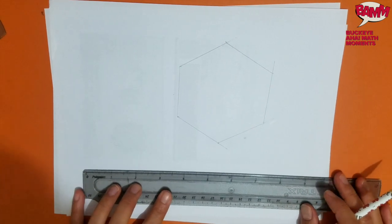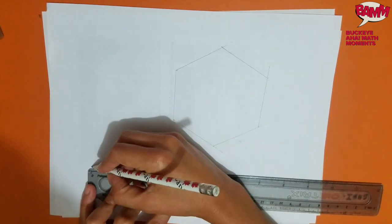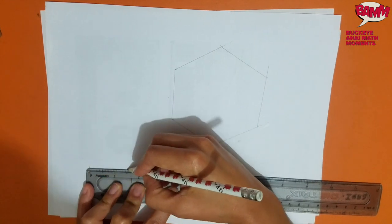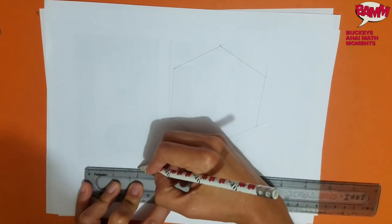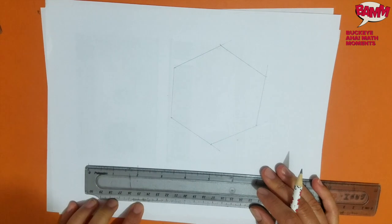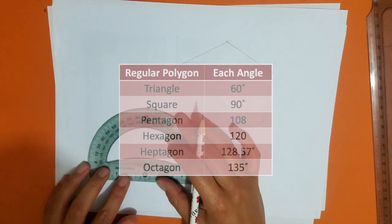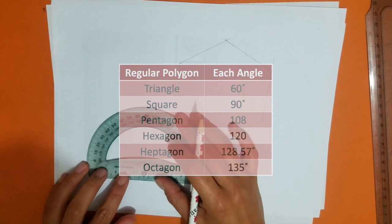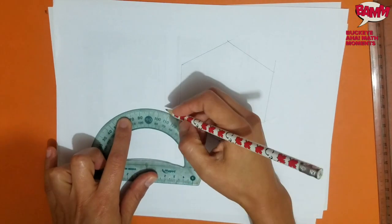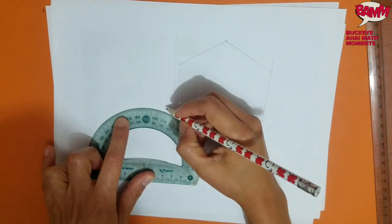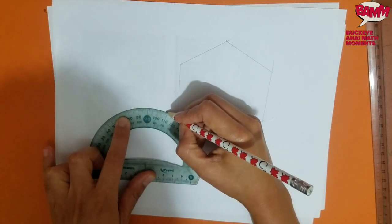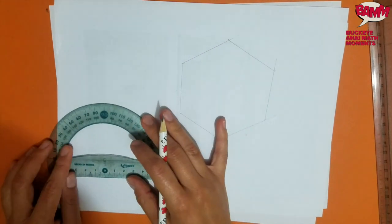So let's try a pentagon now. Again, I'm going to start by marking a side. Again, 2 inches. But remember that you can do any length that you want. And now the angle for the pentagon is 108. So I place my protractor here and I'm going to mark 108 degrees on each end of the line.